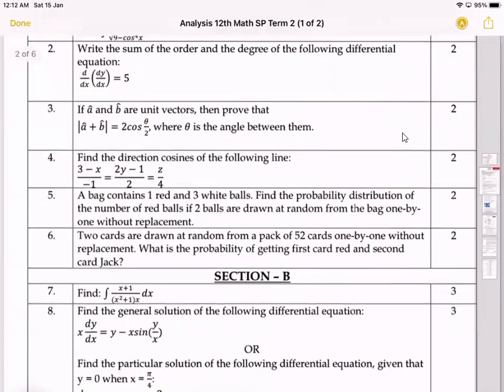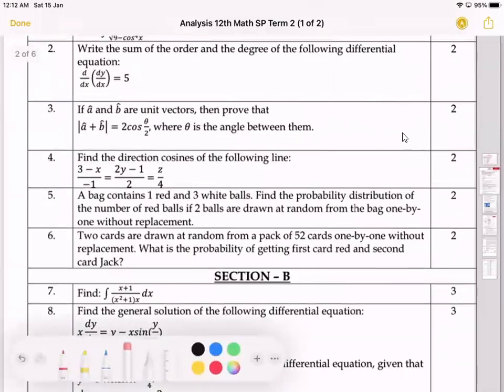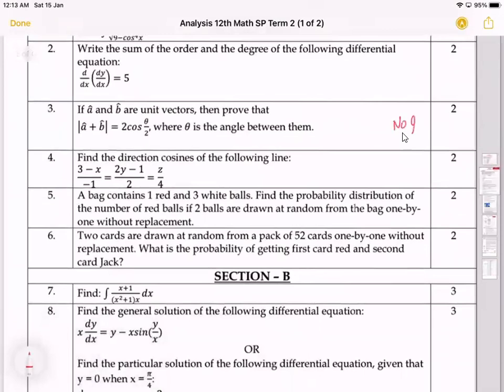And you will find that there is no internal choice. Yes, got my point. Here you cannot find no internal choice in Section A as far as the question paper concerned. Now, if I come to Section B.